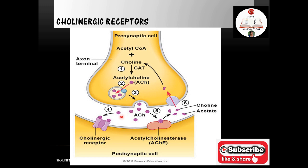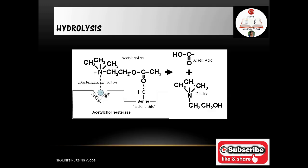Acetylcholine is released and goes to the receptor site. The excess acetylcholine is then hydrolyzed by an enzyme called acetylcholinesterase, which is present under the post-synaptic cell wall. It degrades acetylcholine into choline and acetate — this process is called hydrolysis.